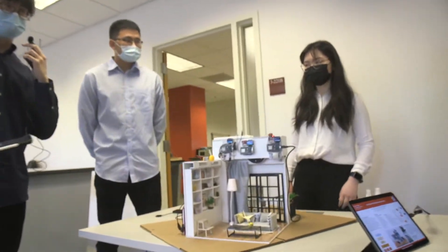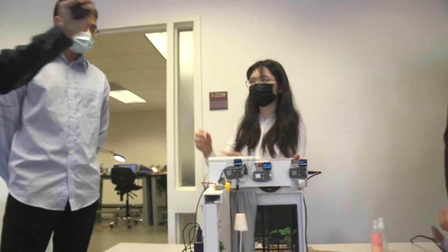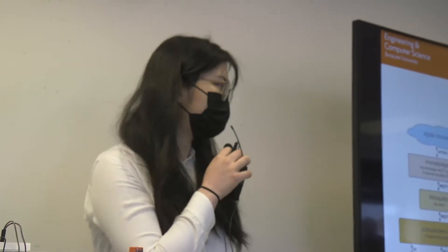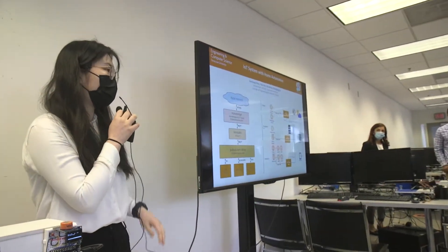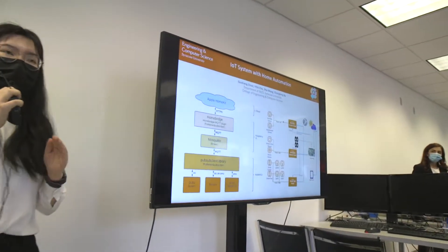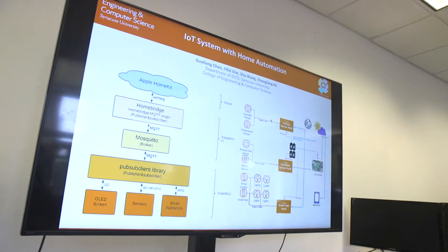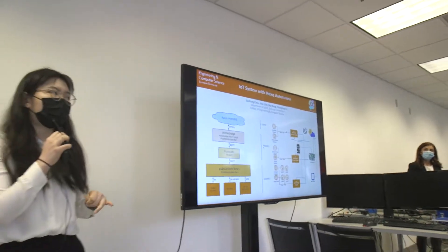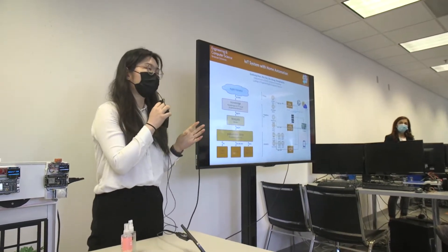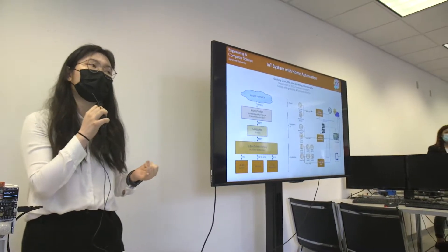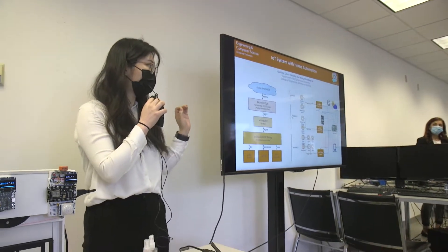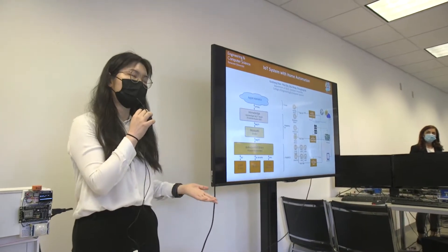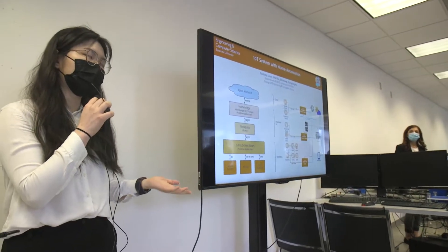Now Xu is going to talk about the software aspect of the system. You can see the software stack on the diagram. MQTT is the most important software part, and it requires three parts: broker, subscriber, and publisher. On NodeMCU, there is a library called PubSubClient Library. Homebridge is both a publisher and subscriber because it can send and receive messages.